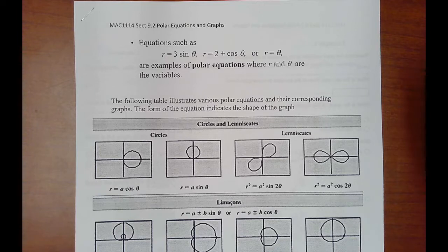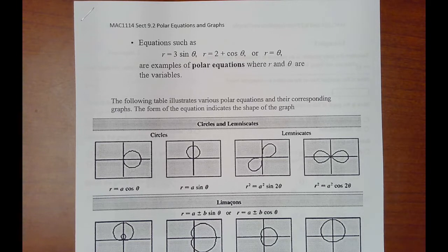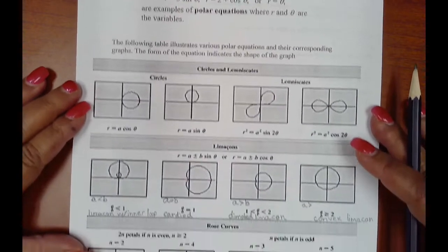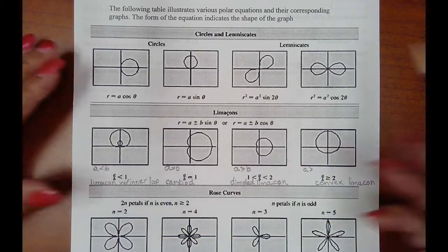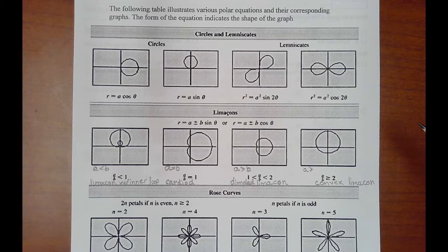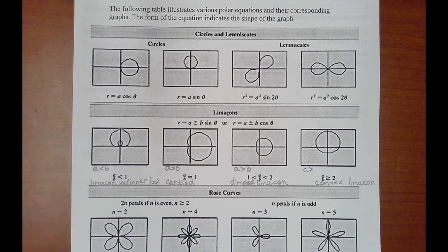This is the lecture video for MAC 1114 Trigonometry. We're in section 9.2, and in this section we're going to take a look at polar equations and their graphs. You see several examples of polar equations grouped according to their families in the table below. This will give you an idea of the kind of graphs you're going to be looking at. They all have different forms, and based on the form the equation is given in, just like in algebra classes, each form suggests a different shape. The same thing is true of these polar equations.